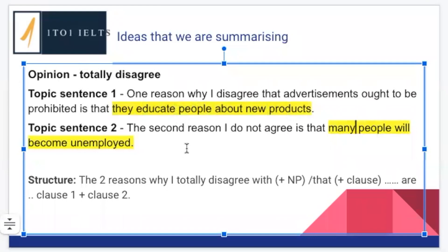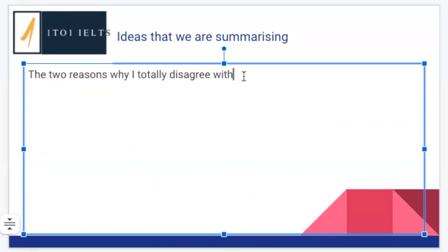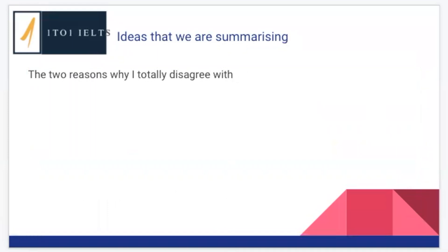Are we going to mention our opinion first or after the ideas? First, as we can see in the structures I have created for you here. I've got a couple of different structures we can use. It's an opinion essay — there's always going to be two reasons for your opinion. The two reasons why I totally disagree — or completely, whichever adverb you want to use. Then we can use 'with' plus a noun phrase, or 'that' plus a clause. Let's look at the 'with' structure first. If I use 'with,' I want a noun phrase — we're basically showing what we are disagreeing with. So how can we look at the question — 'some people think that there should be a complete ban on all forms of advertising' — and indicate what we're disagreeing with using a noun phrase?